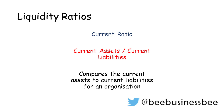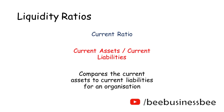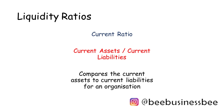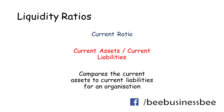One of the ratios we can use is something called the current ratio. The current ratio is calculated by taking your current assets — items you own that you can turn into cash within a year — divided by your current liabilities, which are items or debts that you owe and have to pay within a year. That's what the word 'current' means in financial terms.